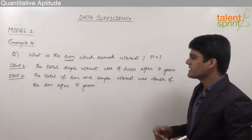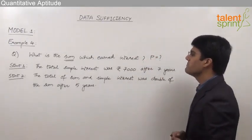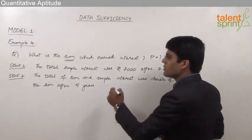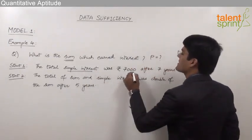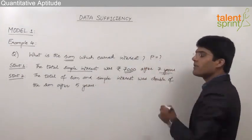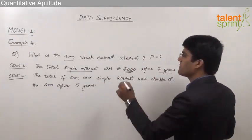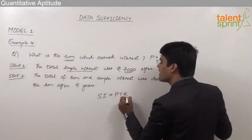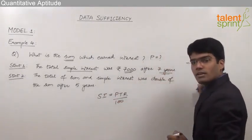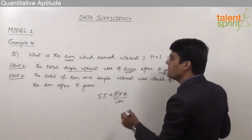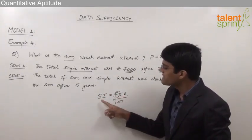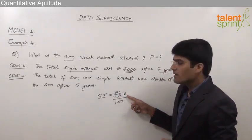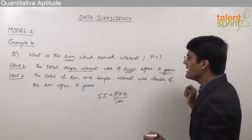Let us now look at the two statements. Statement 1 says the total simple interest was rupees seven thousand after seven years. That means SI = 7000 after a time period of 7 years. Going by the formula of simple interest, we know that SI = PTR/100. We need to find out principal P, so we must know the simple interest, the time period, and the rate of interest.